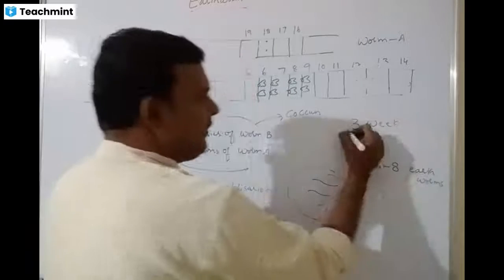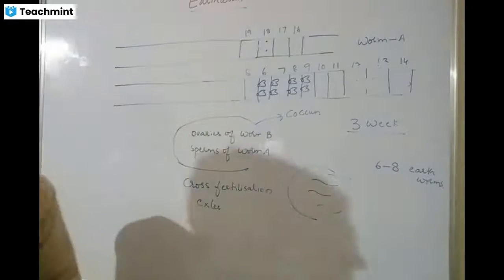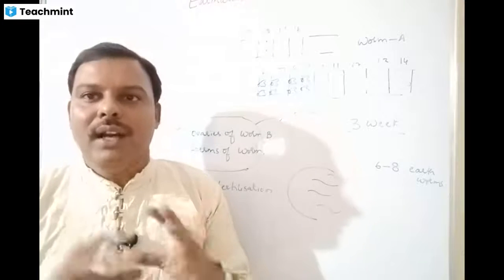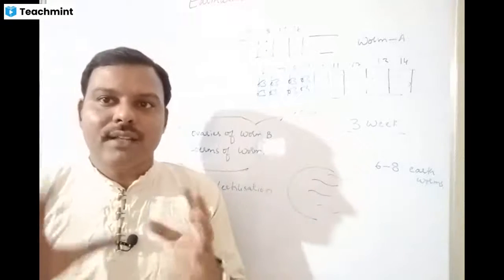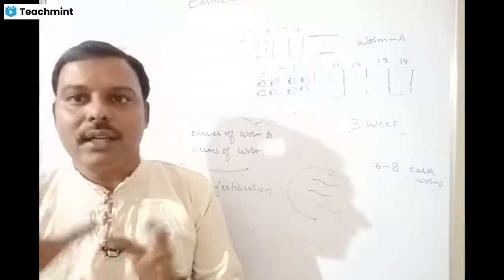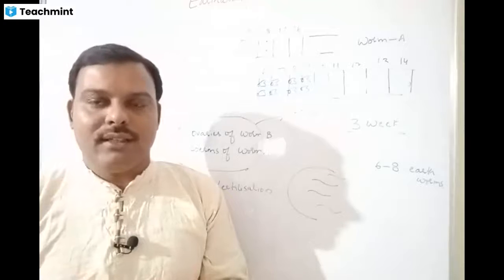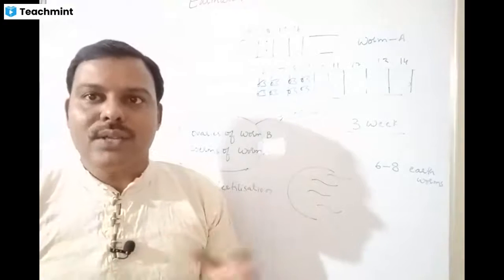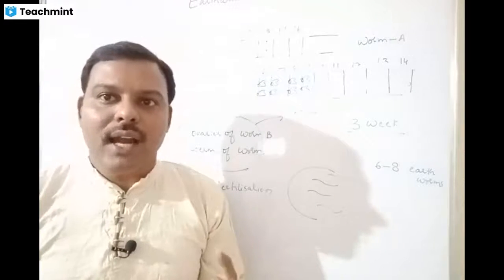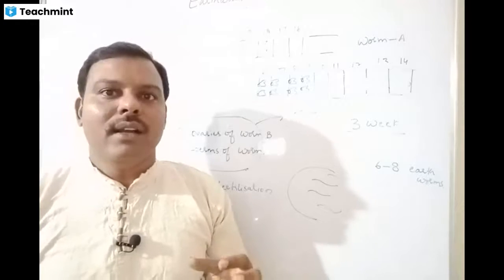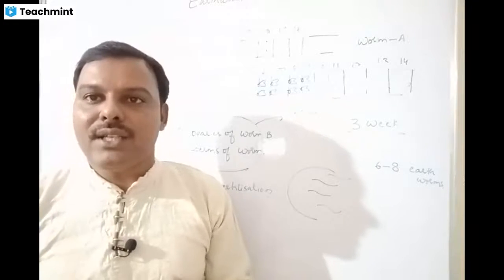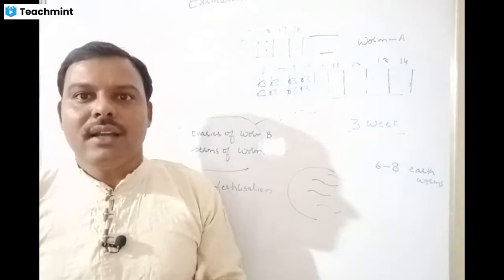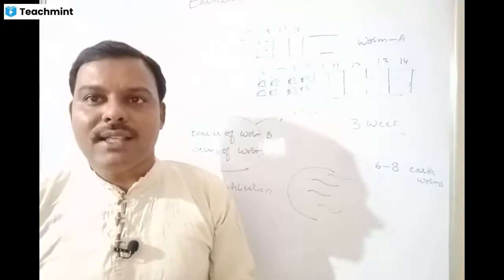In summary: earthworm shows many important features — digestive system with gizzard at segment 8, narrow stomach, wider intestine, intestinal caecum, and typhlosole. Glands include pharyngeal glands and intestinal caecum. Undigested food is useful as vermicast for farmers. Circulatory system is well developed with dorsal and ventral vessels connected by hearts. Respiration through the skin. Excretory system has three types of nephridia. Reproductive system shows hermaphroditism with cross-fertilization, protandry, and direct development in a cocoon.